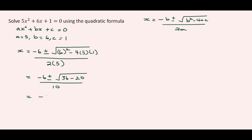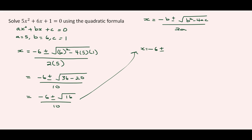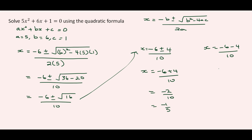This gives us minus 6 plus or minus the square root of 16 over 10, which simplifies to X equal to minus 6 plus or minus 4 divided by 10. So now we have two answers. X equal to minus 6 plus 4 over 10, giving us minus 2 over 10, which is minus 1 over 5. And X equal to minus 6 minus 4 over 10, giving us minus 10 over 10, which equals minus 1. Therefore X is negative 1 over 5 and negative 1.